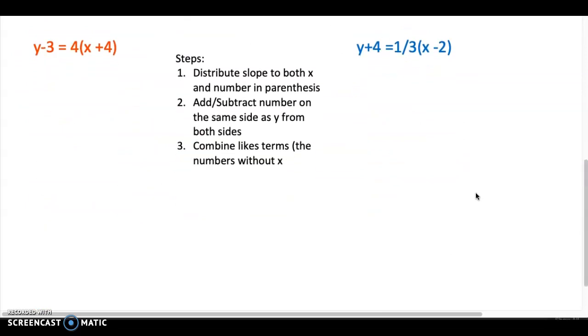So we got two examples of point-slope form. Red and blue. I'm going to start with the red again. So the first step is I'm going to distribute the slope to both the x and the number in the parentheses. So this 4 has to get multiplied to this x and to that 4. So 4 times x is 4x. And 4 times 4 is 16. So the rest of this stuff just drops down. Y minus 3 is still right here, still equal to that stuff.